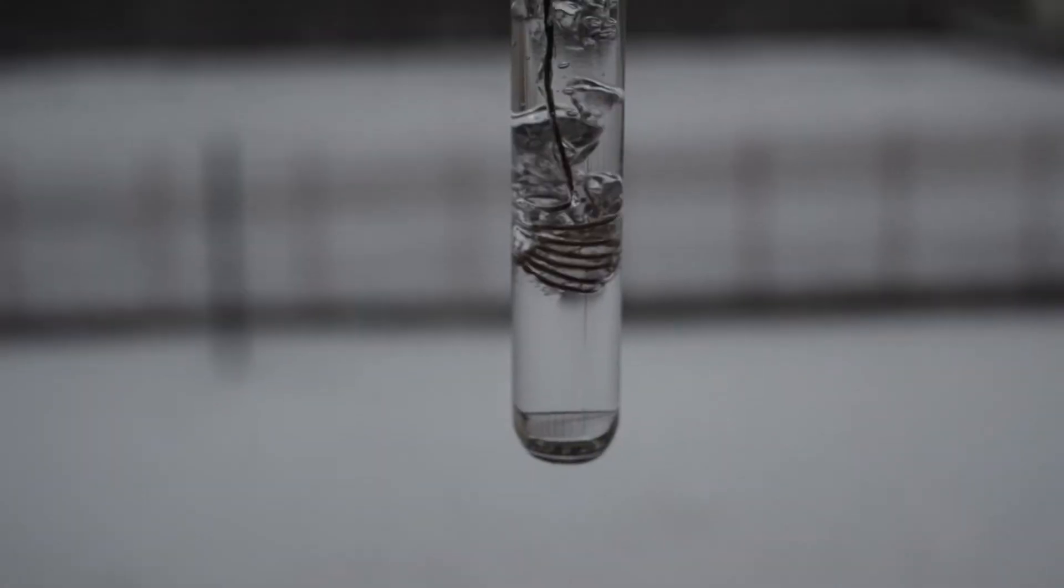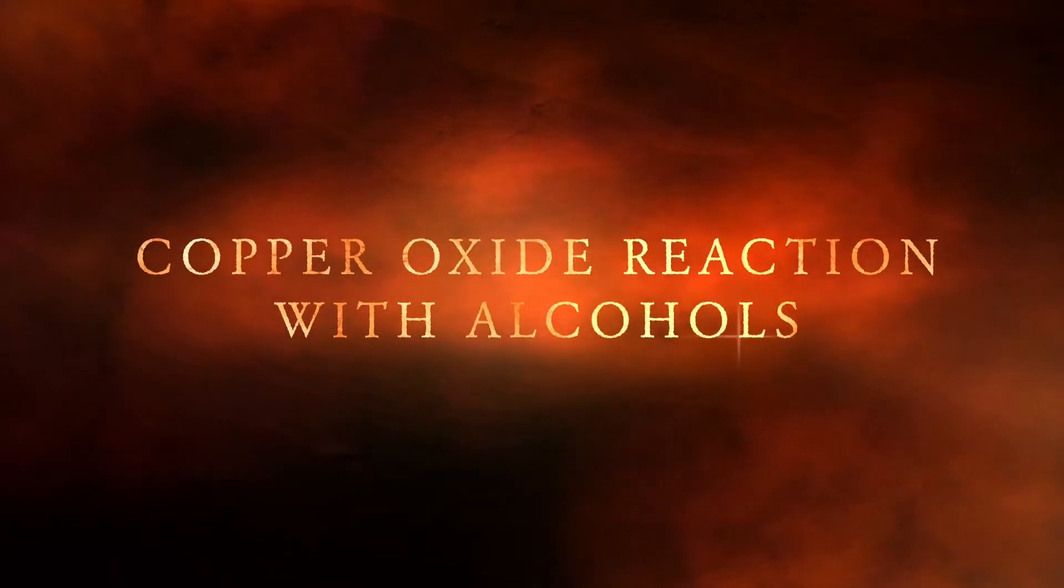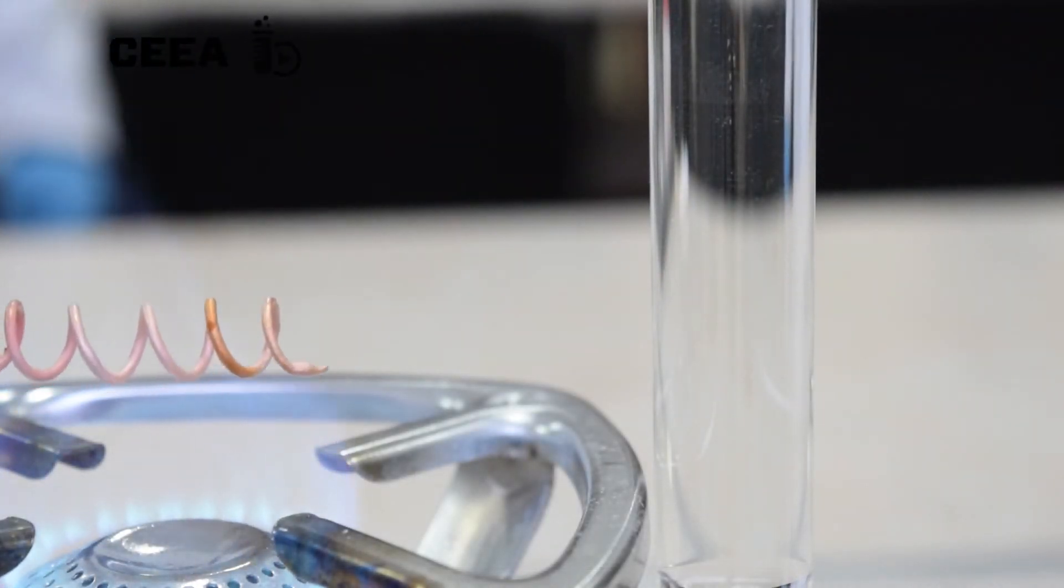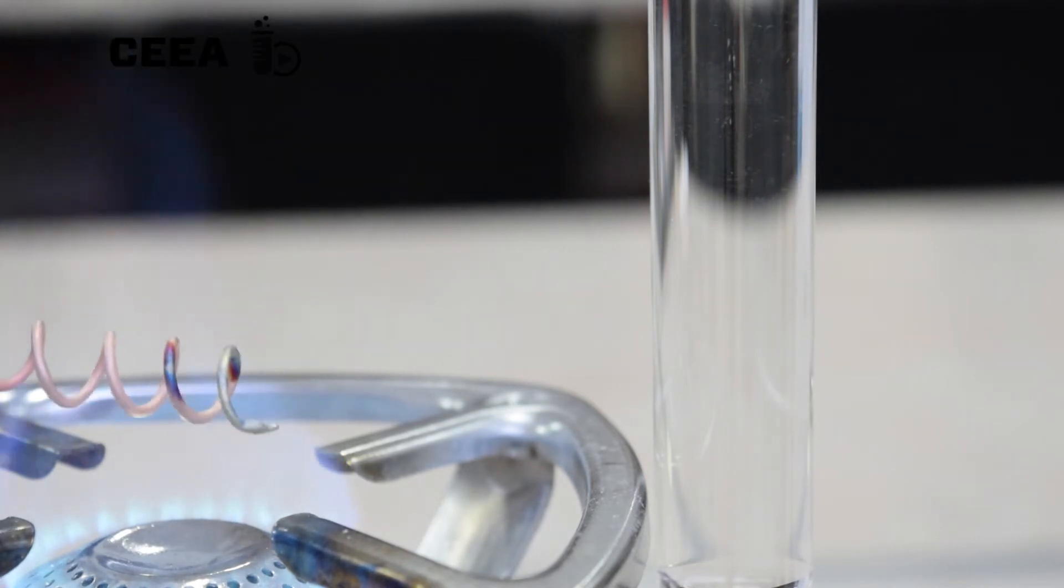The copper oxide reaction with primary and secondary alcohols. If you heat a copper wire in a burner, it will cover itself with a black layer of copper oxide.